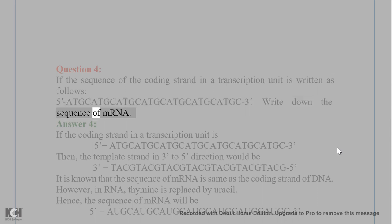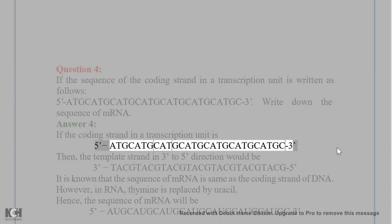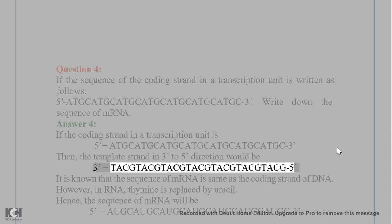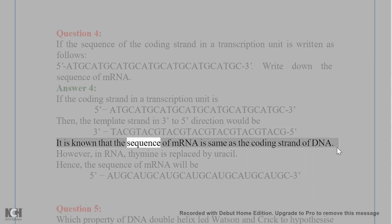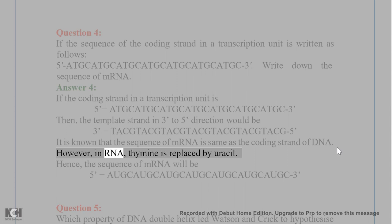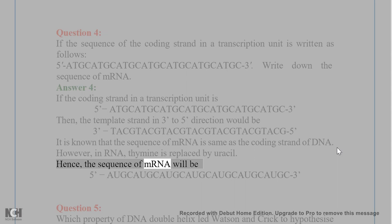Question 4. Write down the sequence of mRNA. Answer 4. If the coding strand in a transcription unit is 5'-ATCATCATCATCATCATCAT-3', then the template strand in 3' to 5' direction would be 3'-TAGTAGTAGTAGTAGTAGTA-5'. The sequence of mRNA is the same as the coding strand of DNA; however, in RNA, thymine is replaced by uracil. Hence, the sequence of mRNA will be 5'-AUCAUCAUCAUCAUCAUCAU-3'.